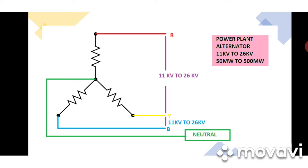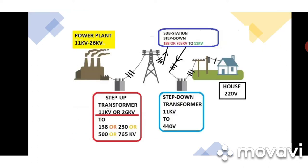From the power plant, it passes to a step-up transformer where the voltage is built up higher. Why do we step up the voltage? Because when voltage increases, current decreases, so the conductor size — the cable size — for transferring electricity becomes smaller. That is the purpose of stepping up the voltage.